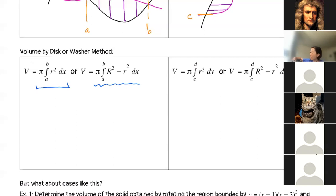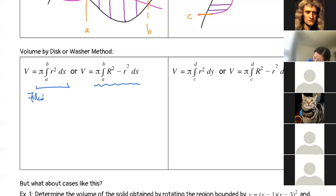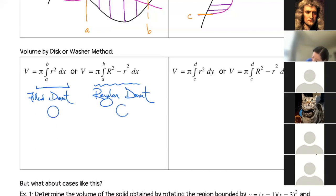How do we know when we have pi R squared, and how do we know when we have pi times big R squared minus little R squared? We've got a filled donut and a regular donut. This one — the cross-section is just like a circle. But in this case, we actually have a big radius and then a little radius. We have to account for those.